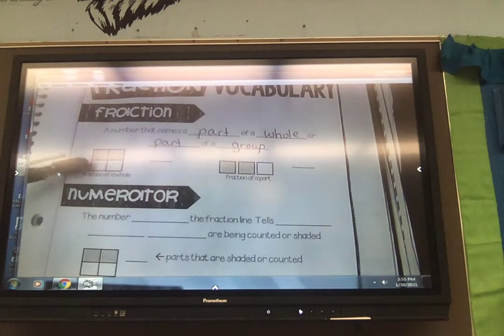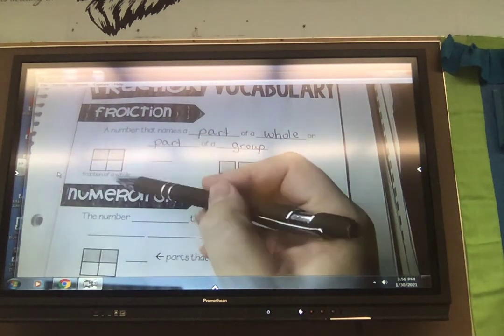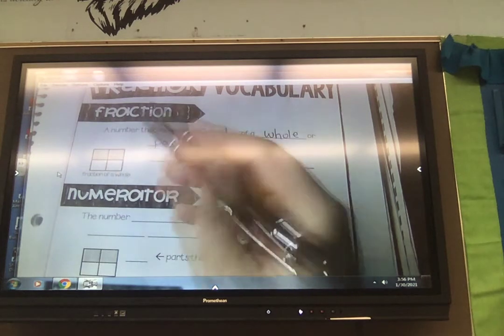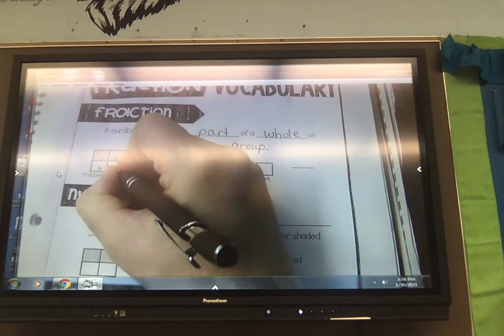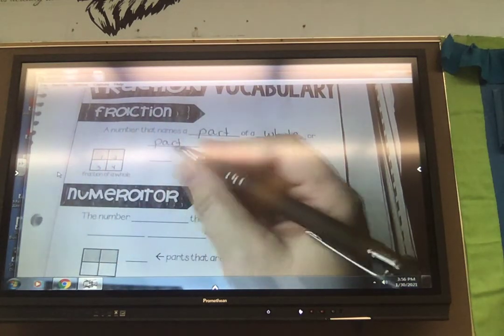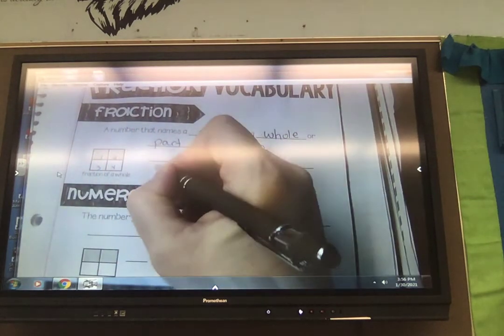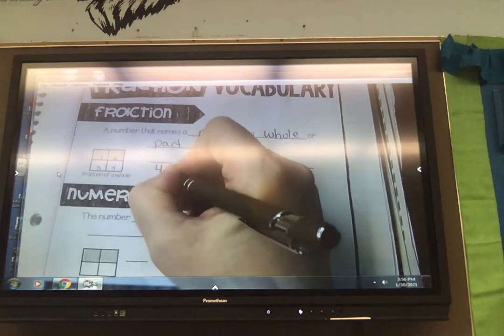So looking at this first picture, this would be part of a whole. We have a whole rectangle that has been cut into four parts. One, two, three, four. This is like our area model, isn't it? This looks similar to area, where we count those squares.